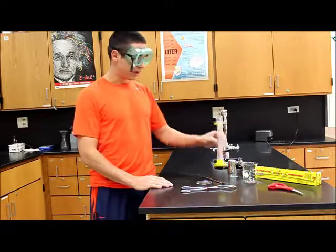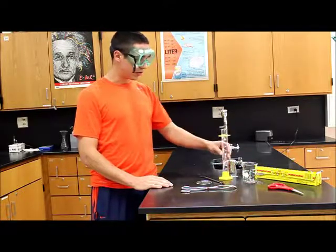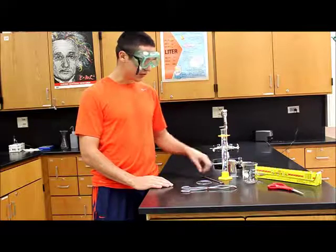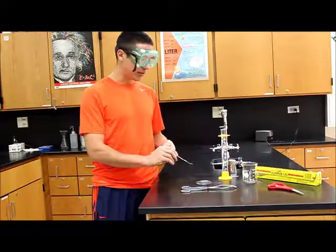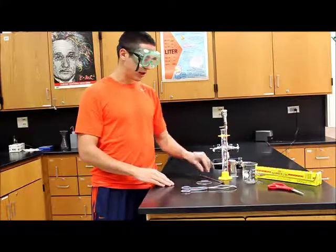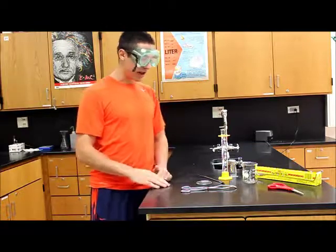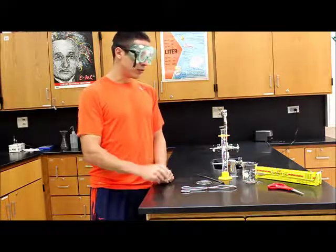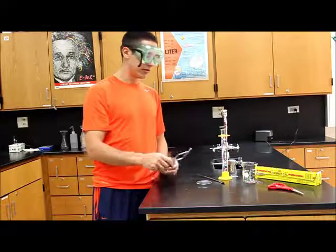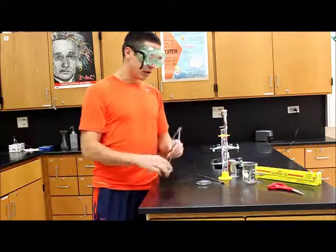We're going to have a 250 milliliter beaker where we're going to actually be doing the reaction. You're going to be adding some tap water to that. We have a 100 milliliter graduated cylinder to measure out the water. The exact amount of water is not really necessary but you want to make sure that you record that. We have a scooper so you can measure out the copper(II) chloride. And then the second day after you do the reaction you're going to be removing the aluminum foil from your solution using a pair of tongs.